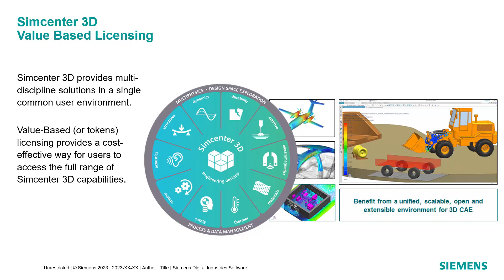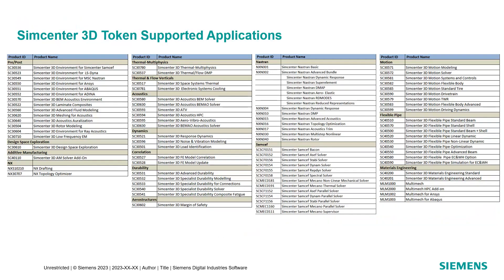Simcenter 3D value-based licensing, or tokens, are the easiest way to access add-on capabilities. If some days you need advanced NAS drain capabilities like multi-step nonlinear, and other days you need laminate composites, or dynamic response, or acoustics, or anything on the list here — tokens will give you access to all of it.